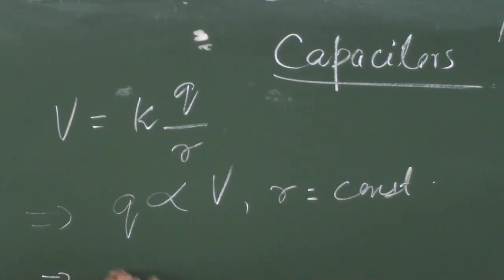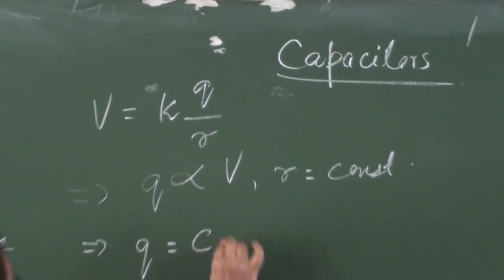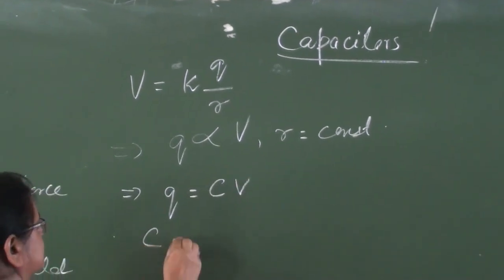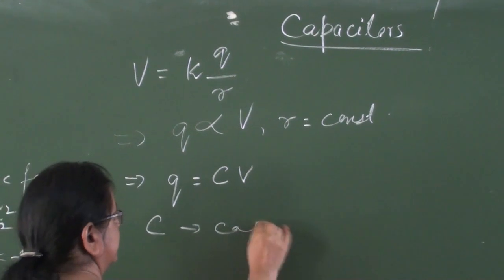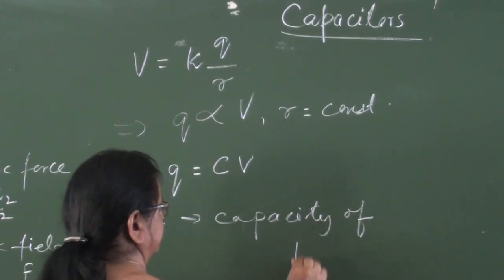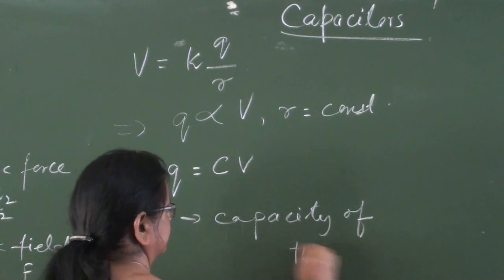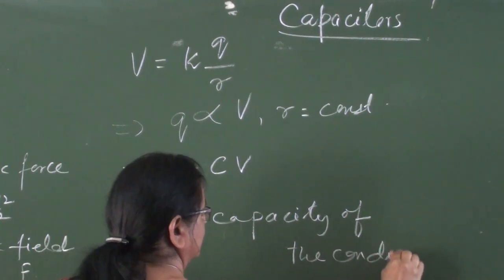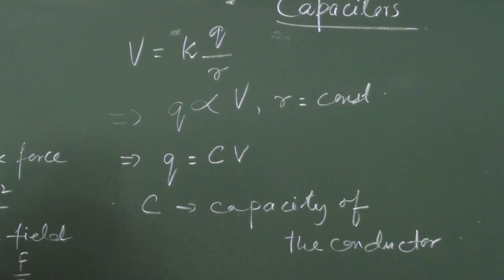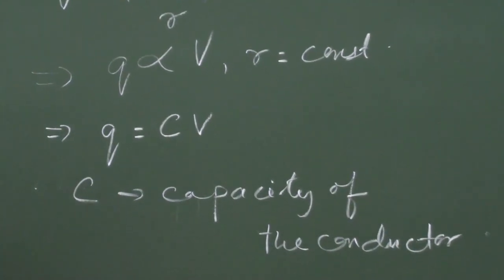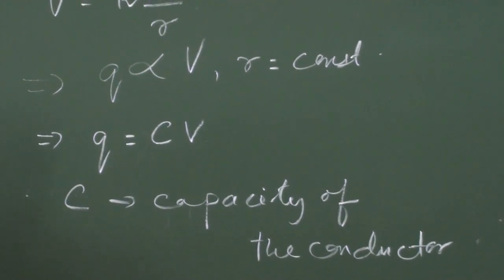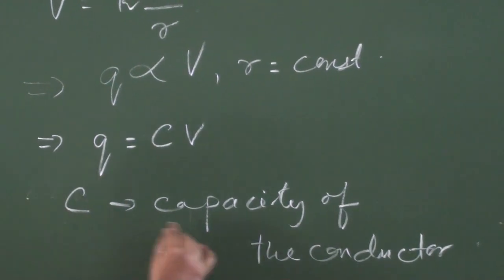Hence, Q is equal to a constant of proportionality into V. And this constant of proportionality is called the capacity of the conductor. What sort of capacity? The charge-storing capacity — this is the charge-storing capacity of the conductor.